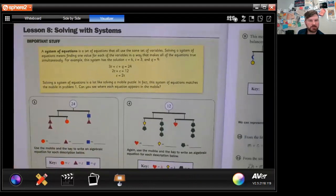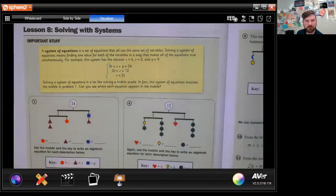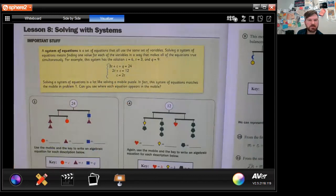A system of equations is a set of equations that all use the same set of variables. Solving a system of equations means finding one value for each of the variables in a way that makes all the equations true simultaneously. For example, this system has a solution: C equals six, T equals three, and Q equals nine. And they give you these three equations right there. Solving a system of equations is a lot like solving a mobile puzzle. In fact, this system of equations matches the mobile in number one. Can you see each equation that appears in the mobile?